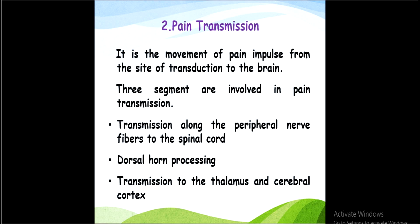Pain transmission is the movement of pain impulses from the site of transduction to the brain. Three segments are involved: transmission along the peripheral nerve fiber to the spinal cord, second is dorsal horn processing, and third is transmission to the thalamus and cerebral cortex. The impulse travels from the site of pain through peripheral nerves to the spinal cord, then to the dorsal horn, and finally to the thalamus and cerebral cortex.